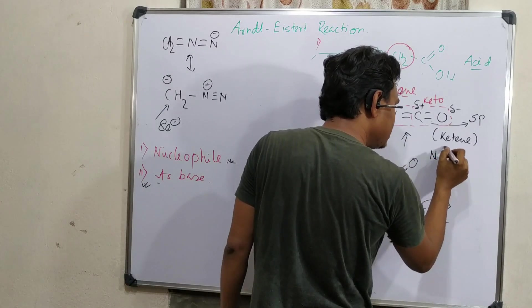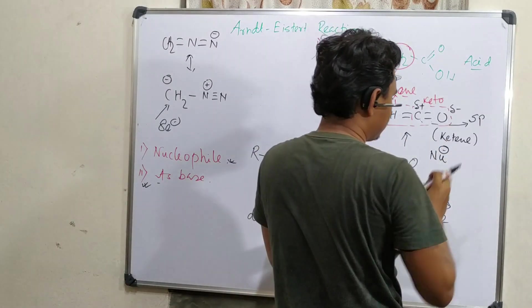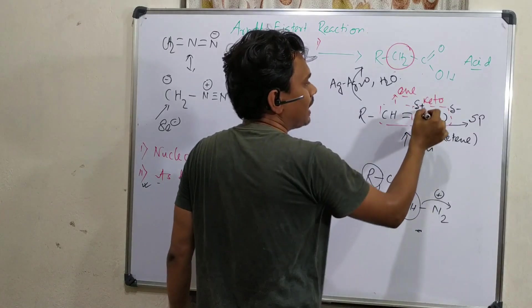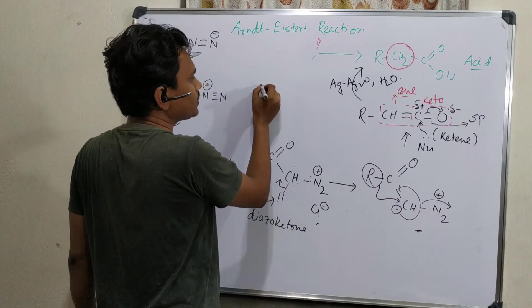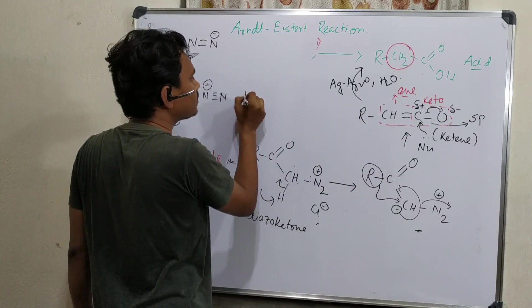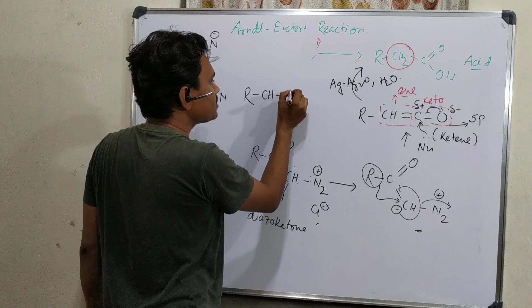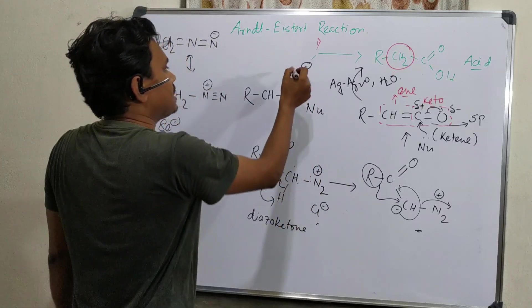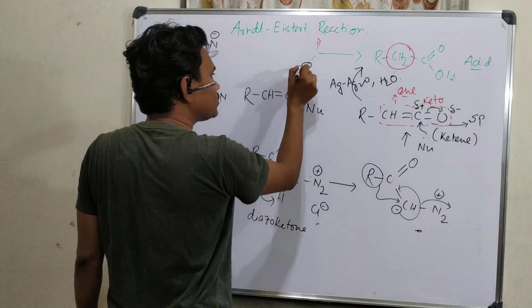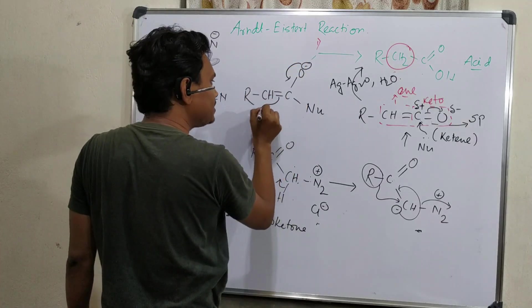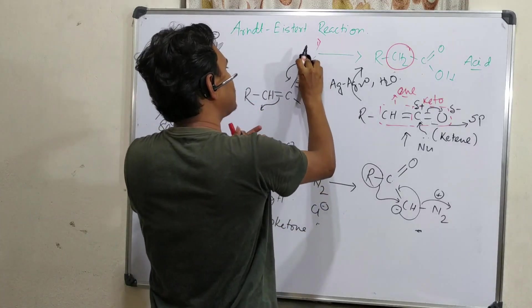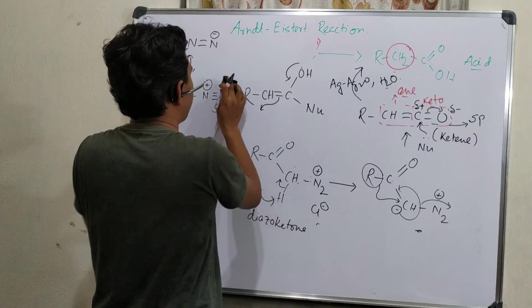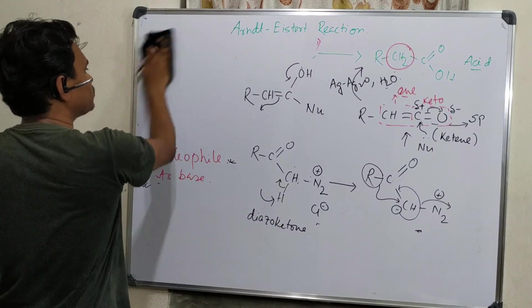This is electron deficient. So this intermediate actually produces the product. How? In presence of silver oxide and water, what happens here? I'm drawing this, I'm actually writing it as a nucleophile. Why, I will explain later. So nucleophile with lone pair attacks here and it goes there. So what it produces? This produces RCH2CONU.